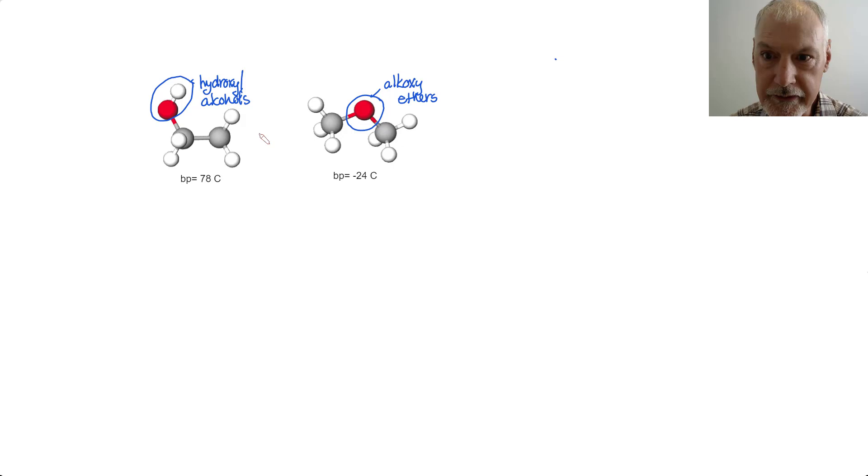Examining their molecular formulas, they both have two carbons, they both have six hydrogens and one oxygen. As a result, these would be considered isomers. And we would call them functional group, or class isomers.